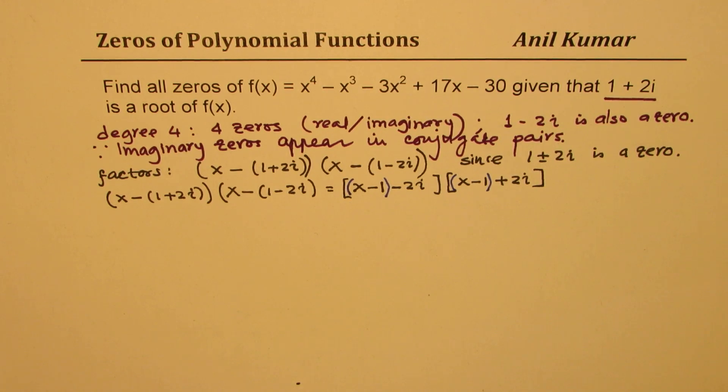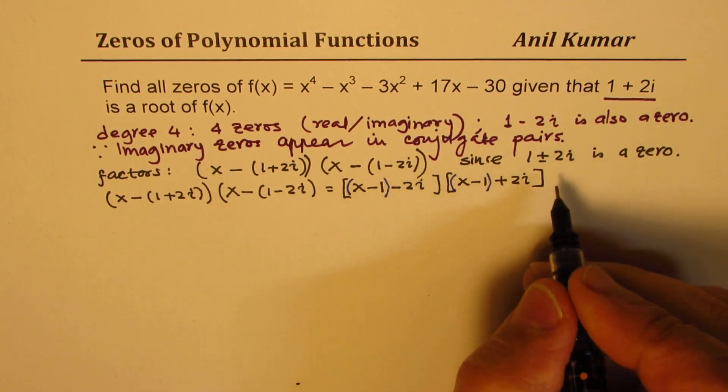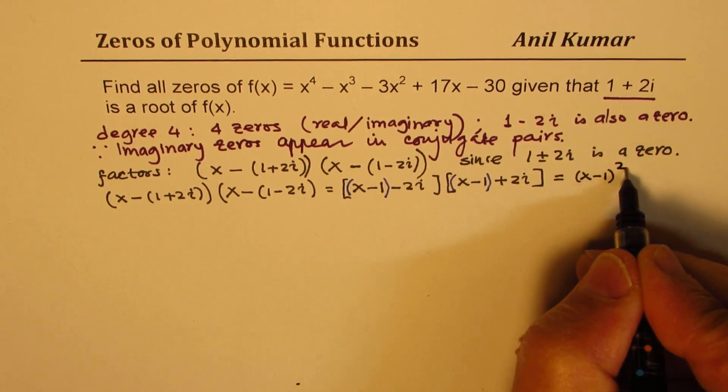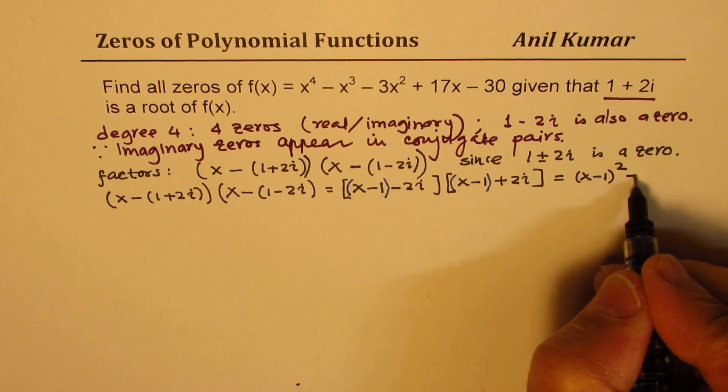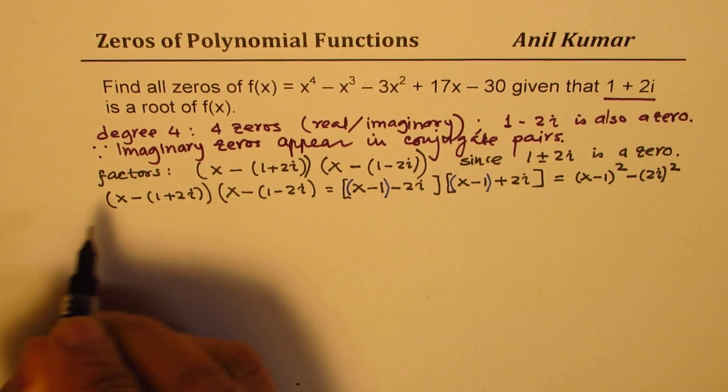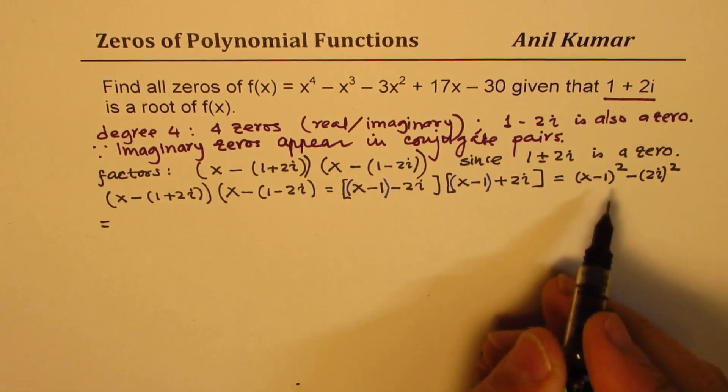If I put brackets here, we have (x - 1) - 2i and here we have (x - 1) + 2i. That becomes like difference of squares, perfect? So this factor, let us expand this further.